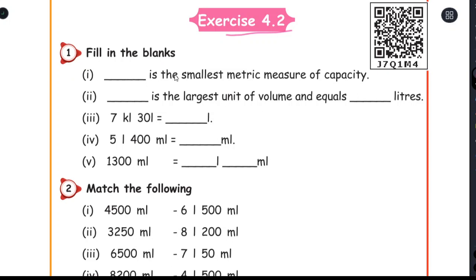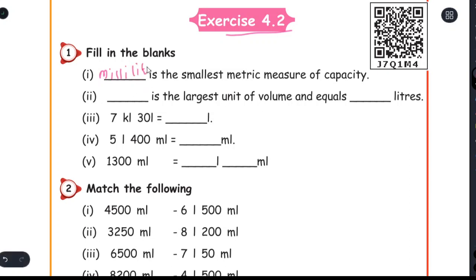Dash is the smallest metric measure of capacity. The smallest and most minute measure — the answer is milliliter, spelled M-I-L-L-I-L-I-T-R-E. Milliliter.